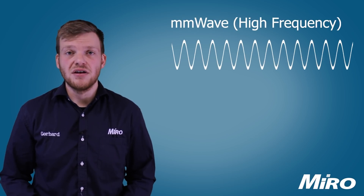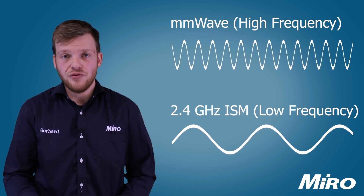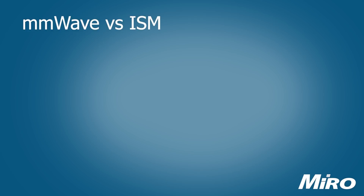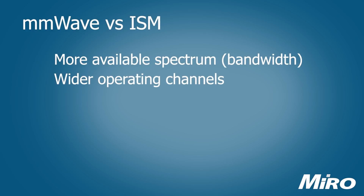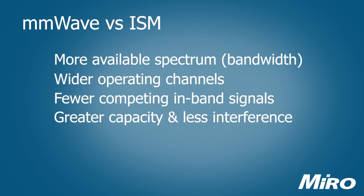Millimeter waves are the highest frequencies that we can use to wirelessly transmit data, and high frequencies have the potential for greater capacity. Another benefit of these extremely high frequency bands is that there is far more bandwidth available for use compared to traditional ISM bands. This in turn allows for wider channels, which is another key factor in maximizing capacity, as well as fewer competing in-band signals, which contribute to interference. All of this combined is what makes millimeter wave great for transmitting high amounts of data in environments where traditional frequency bands are crippled by interference.